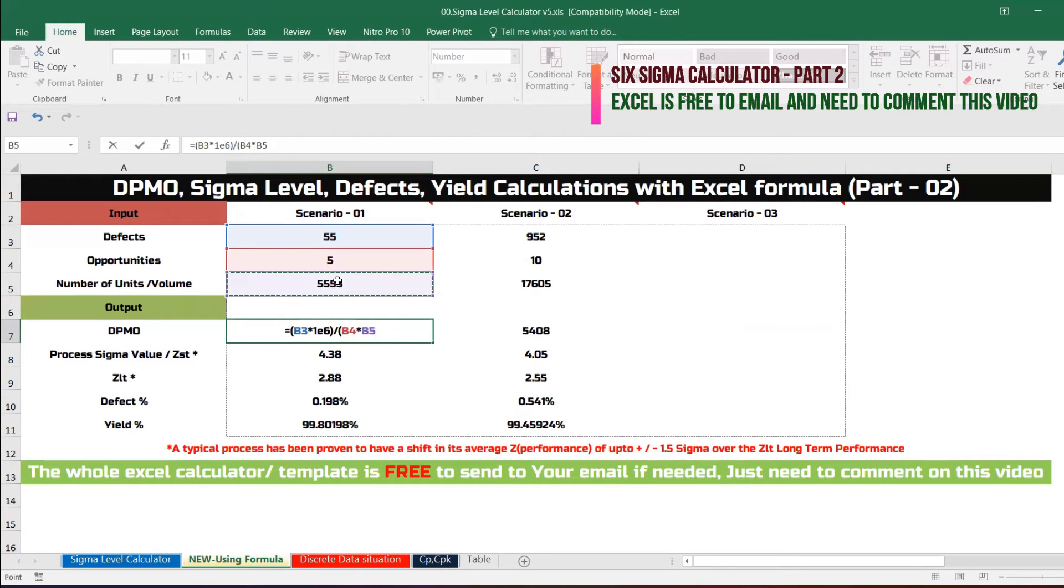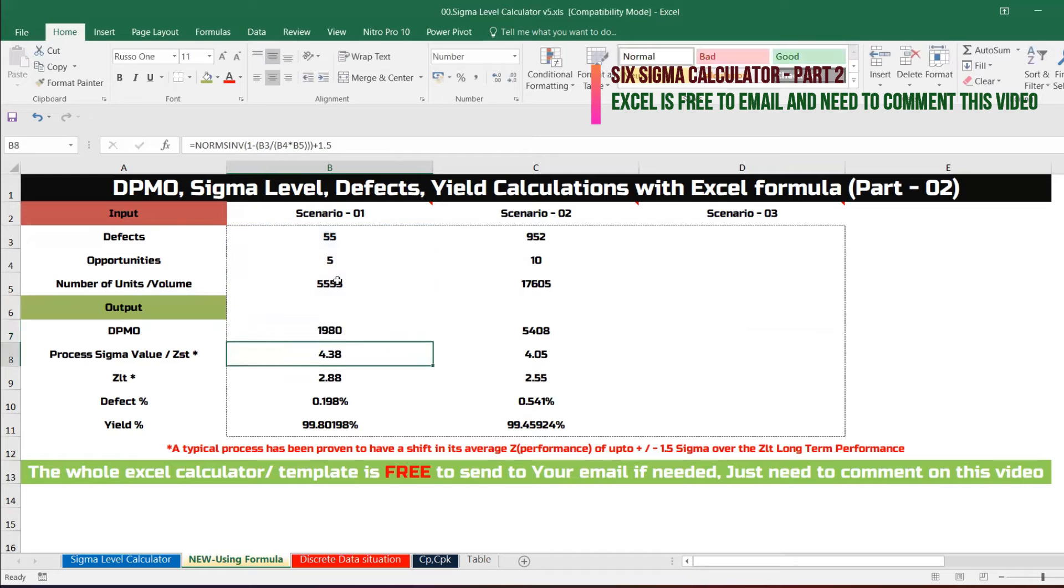Then divided by number of opportunities times number of units. This is the DPMO. How to calculate from the DPMO the process sigma, in other words, it's also called Z ST, Z stand for performance and ST stand for short term performance.